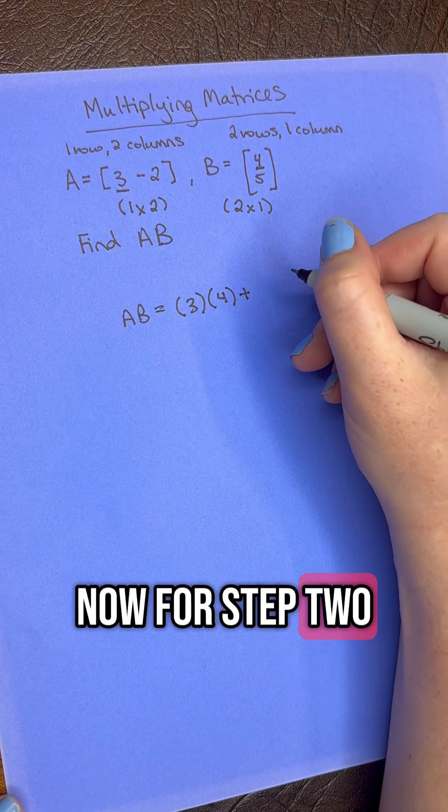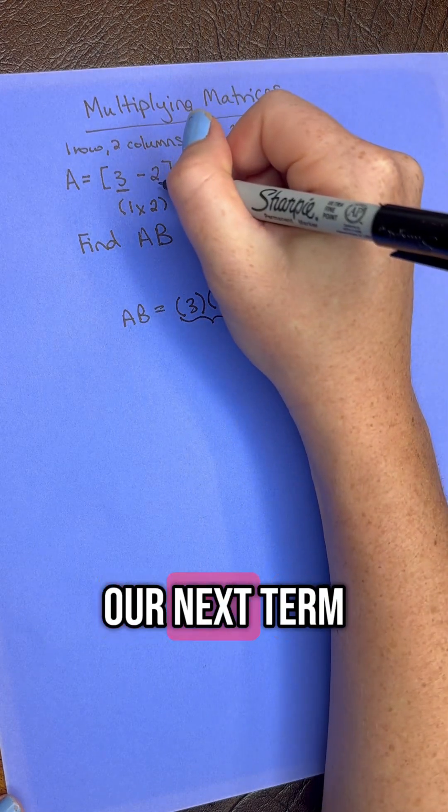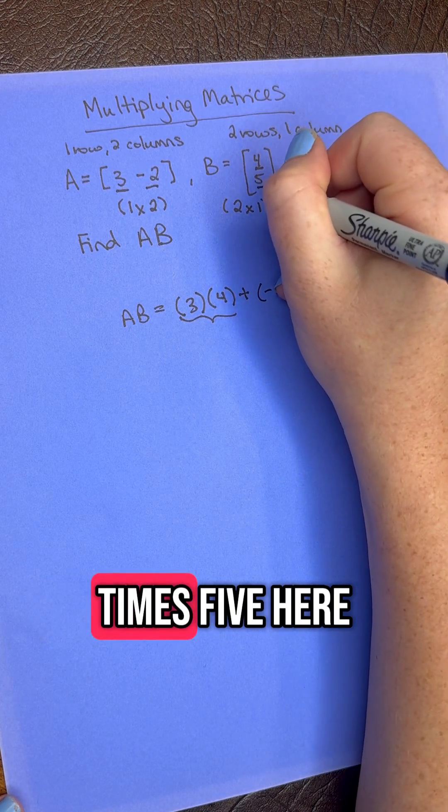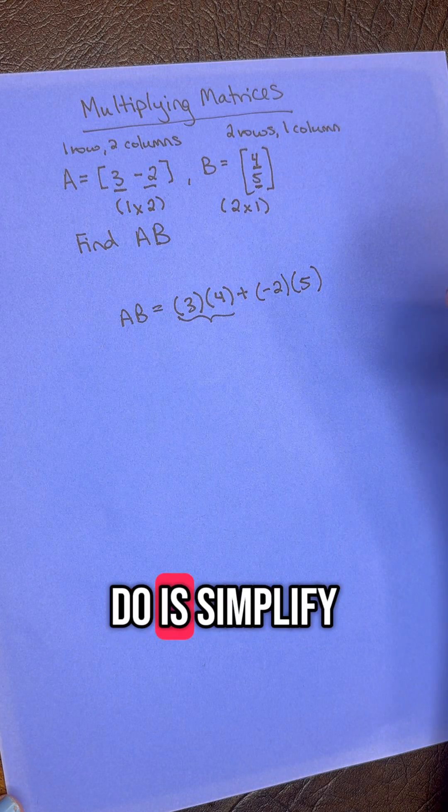Now for step 2, we need to add this to our next term. So we're going to multiply negative 2 times 5 here. And then all we need to do is simplify.